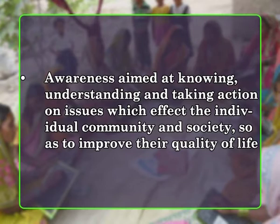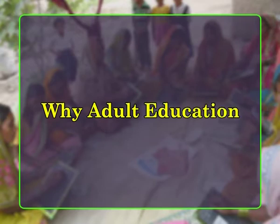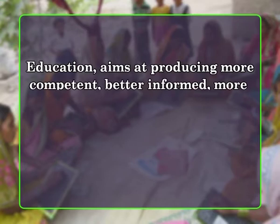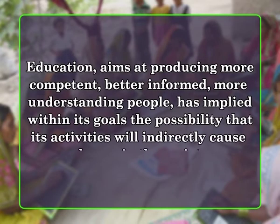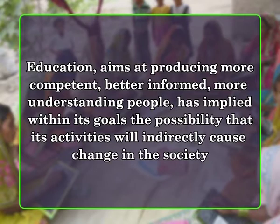All learning is change and all education aims at producing it within the learner as a person and in his or her behavior. Education, since it aims at producing more competent, better informed, more understanding people, has implied within its goals the possibility that its activities will indirectly cause change in society. Indian society before independence in 1947 and after it up to the 1960s witnessed a very slow pace in achieving this change, because a major chunk of the population was not able to participate in the transformation process due to lack of adequate knowledge and paucity of skills.